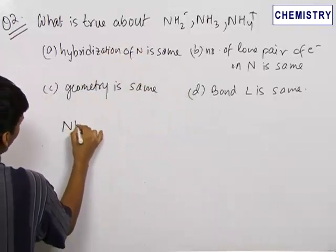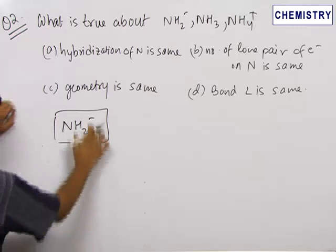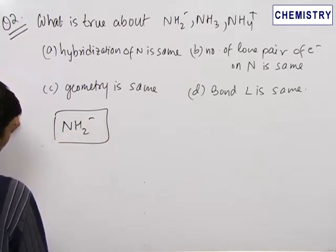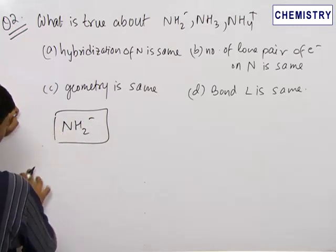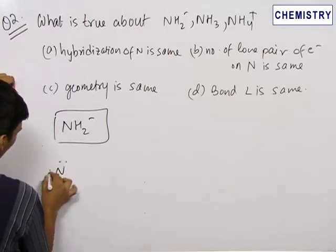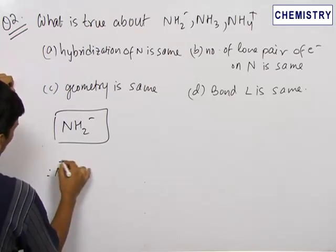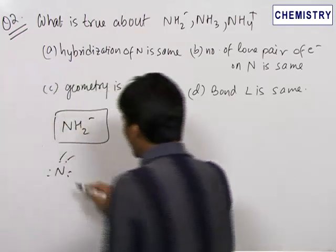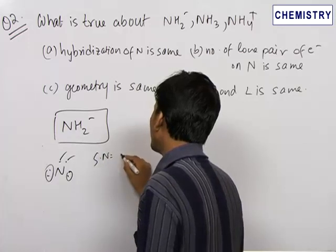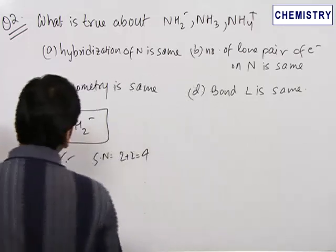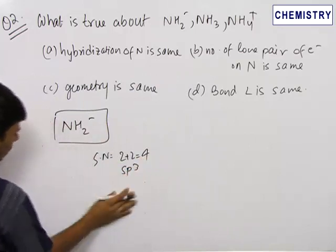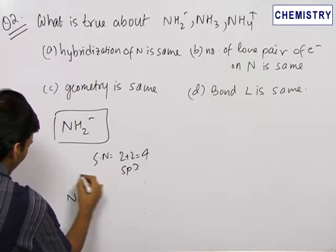Let us first go with NH₂⁻. This negative charge is on the central atom. Therefore, nitrogen now has six electrons in its outermost shell. It needs to complete its octet, so it will take two hydrogen atoms and take two electrons from them. Out of the six, two will be consumed in making bonds with hydrogen. Therefore, it will have two lone pairs. The steric number will be 2 plus 2 equals 4. For steric number equal to 4, the hybridization will be SP3. Drawing the figure, it will be like tetrahedral geometry.